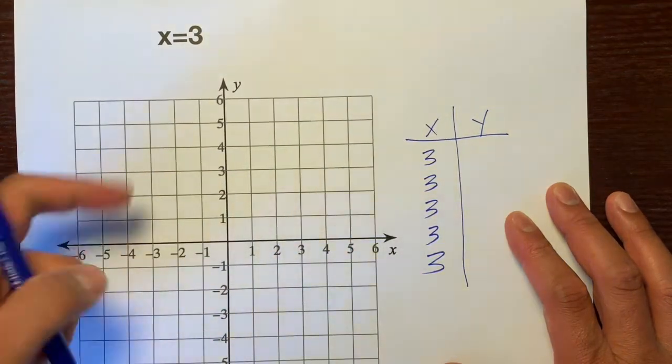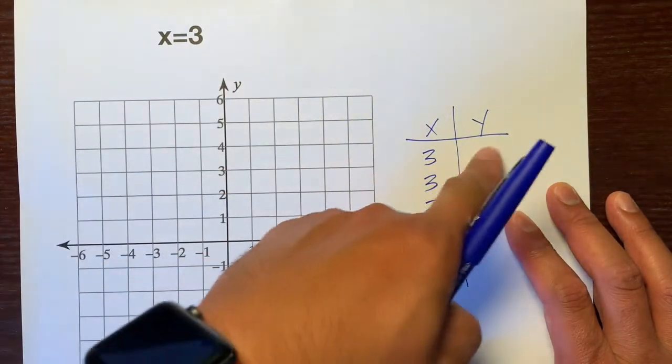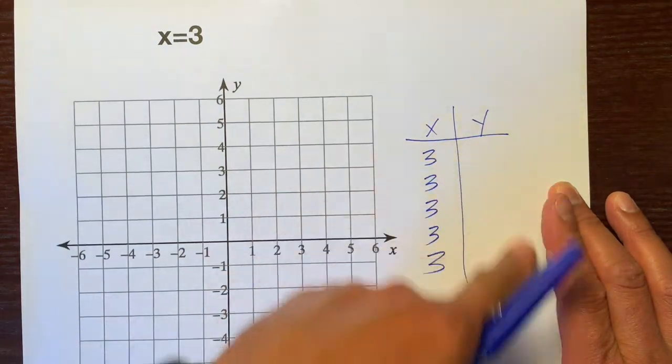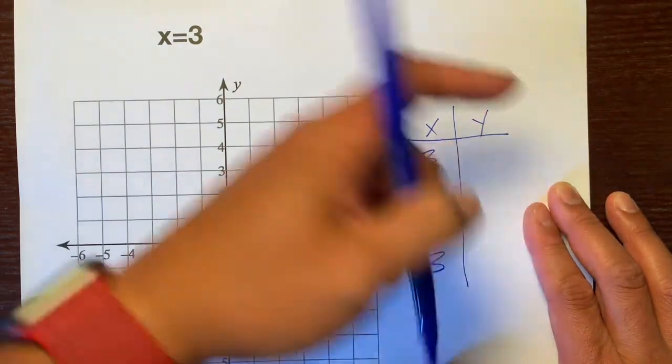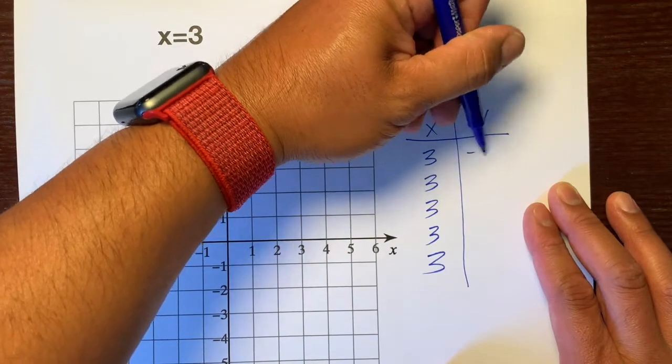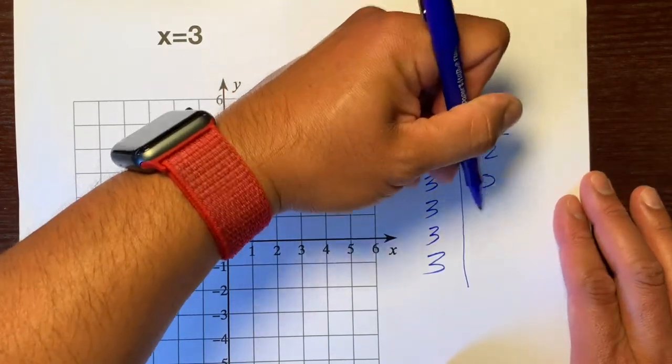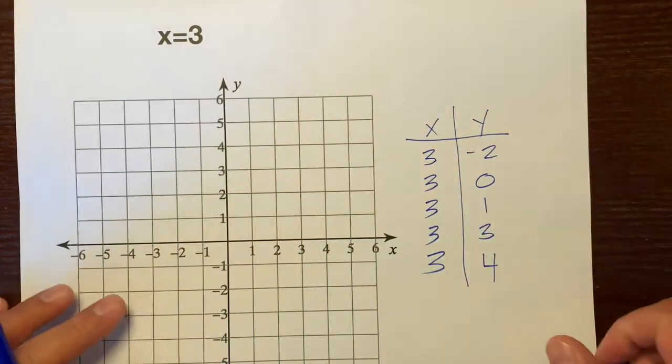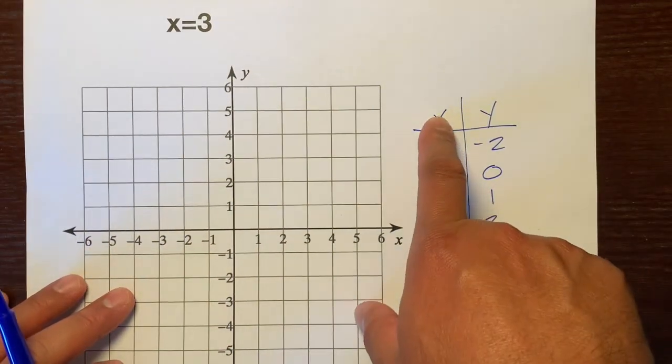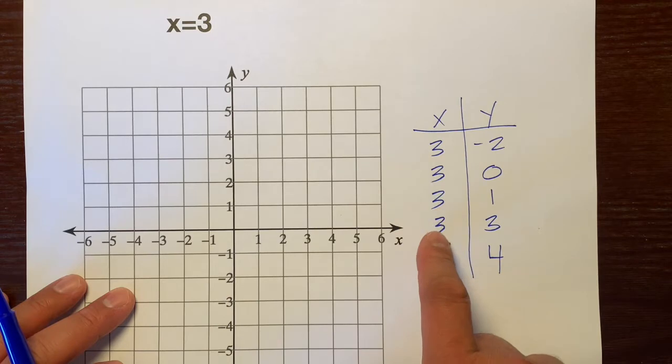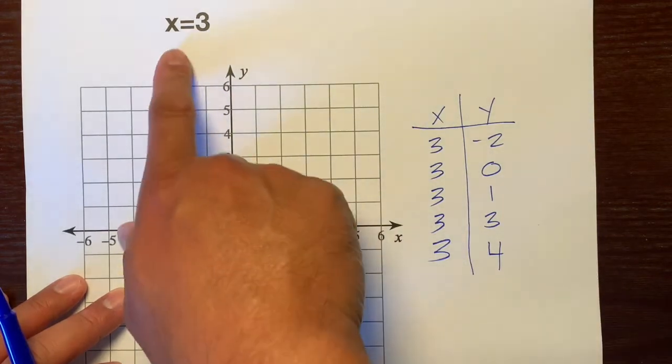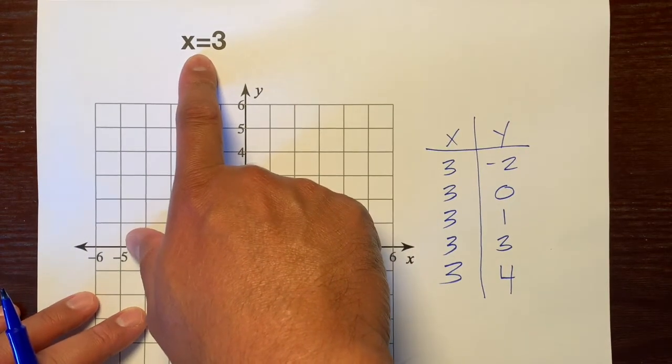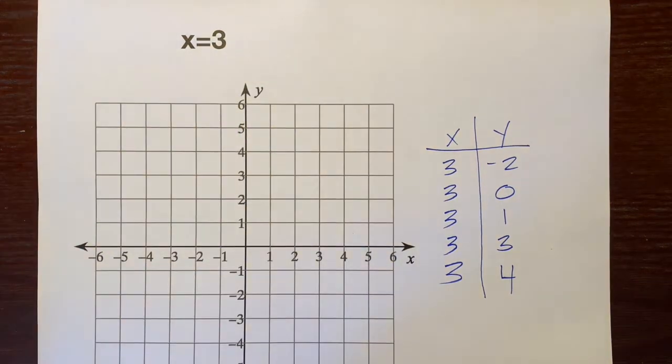There's no y, but let's put in some numbers. Let's assign some numbers for y. Let's do negative 2, 0, 1, 3, and 4. Just some random numbers. But here, we can't assign numbers other than 3 for the x, because the equation that they give us is that x always equals 3.